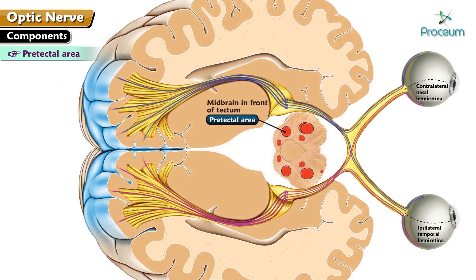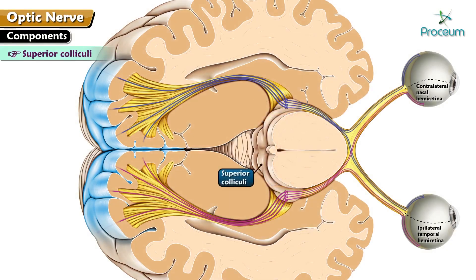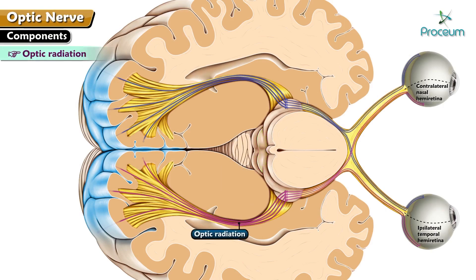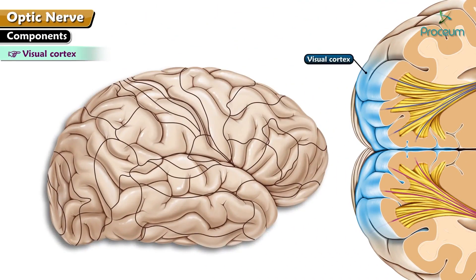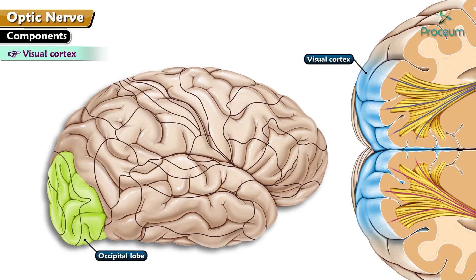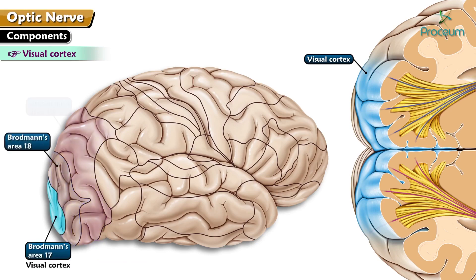The pre-tectile area is present in the midbrain, in front of the tectum. Superior colliculi are a pair of elevations in the dorsal aspect of the midbrain. Optic radiation arises from the geniculo-calcarine tract. The visual cortex is situated in the occipital lobe and is located on the banks of the calcarine fissure. The area concerned with the integration of vision is Brodmann's area 17 around the visual cortex. The neighboring areas 18 and 19 are the visual association areas.